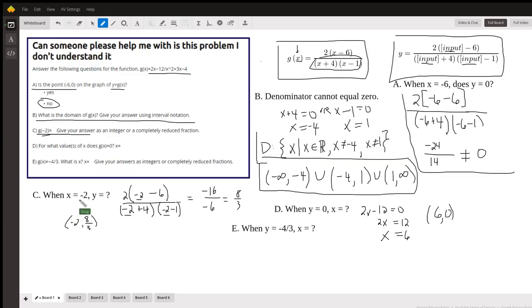For part d, they're asking the question, for what values of x does g of x equal 0? That means they're asking the question, when y equals 0, what does x equal? That's the same as asking, what are the roots of this function? And here's the key. When you have a rational function or you have a fraction, the fraction can only equal 0 when the numerator equals 0.